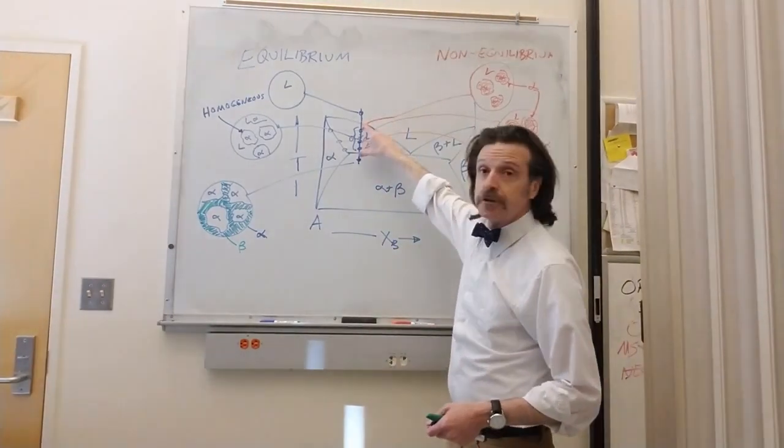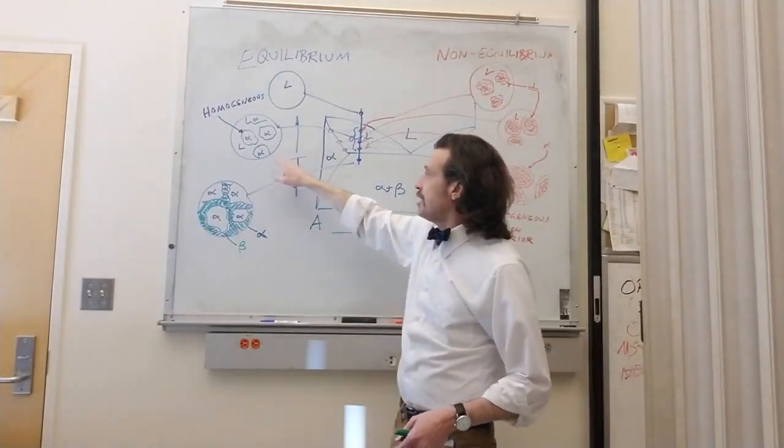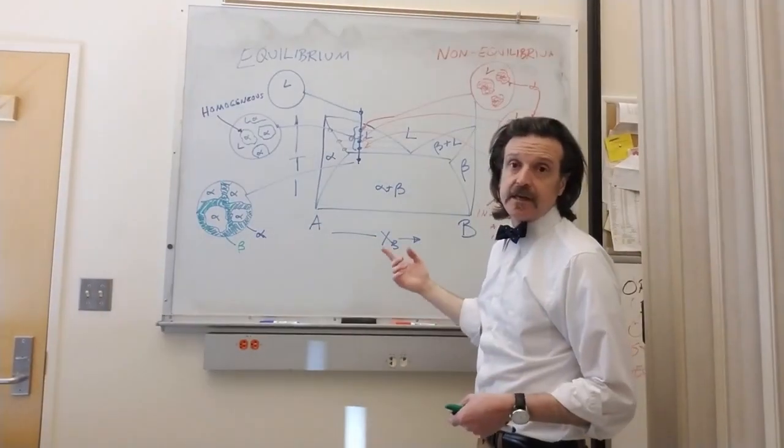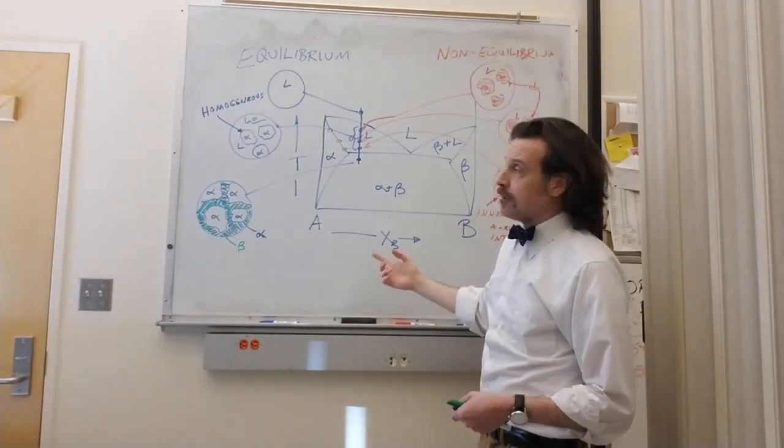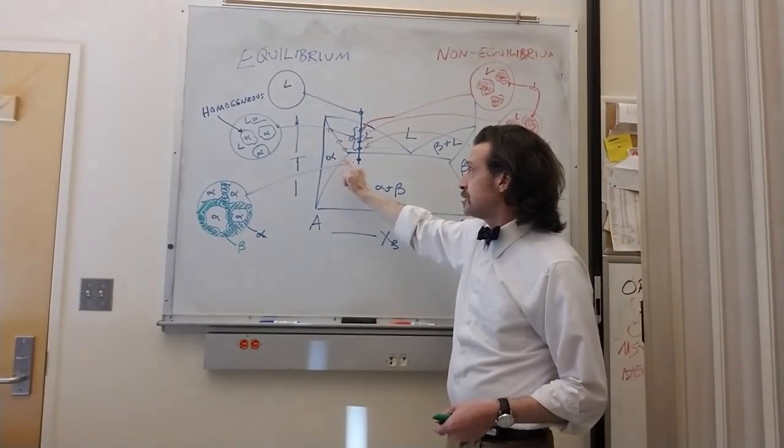In this region, the two-phase region, we have liquid and alpha. The alpha composition we can read from the intercept between the tie line and the phase boundary.